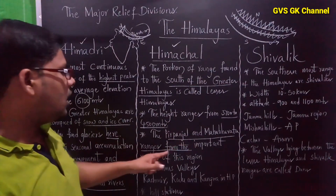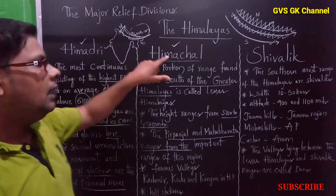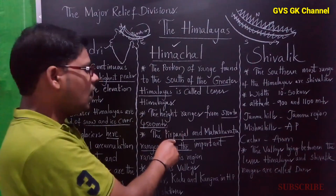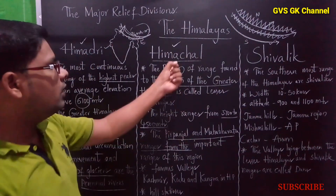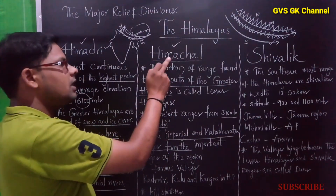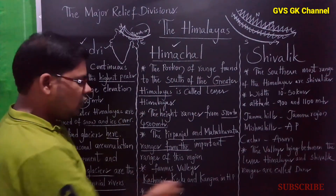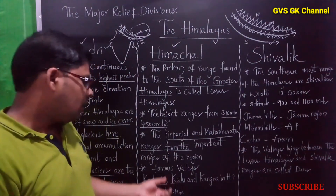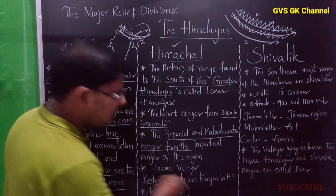You may get a question: the Pirpanjal and Mahabharata ranges belong to which region — Himadri, Himachal, or Shivalik? The answer is the Himachal range, also known as the Lesser Himalayas region. The Himachal range is also famous for its valleys — Kashmir, Kullu, Manali, and Kangra — as well as being famous for hill stations.